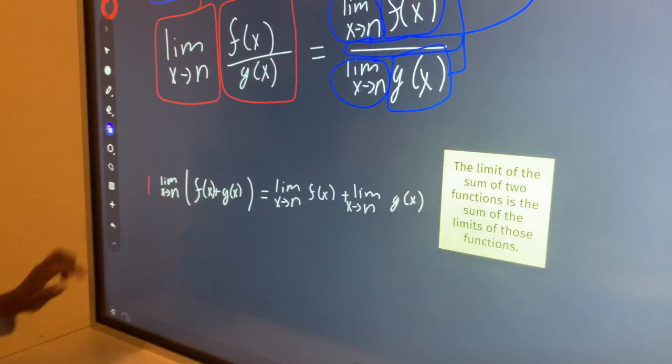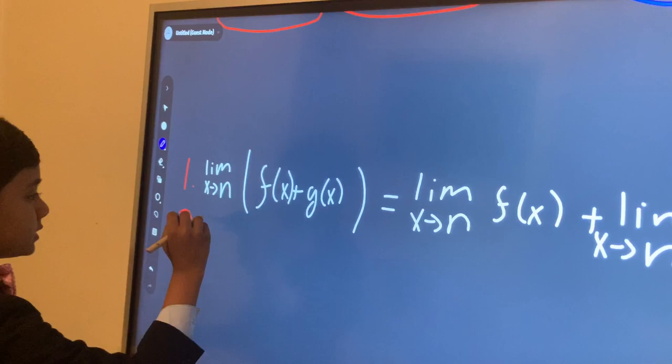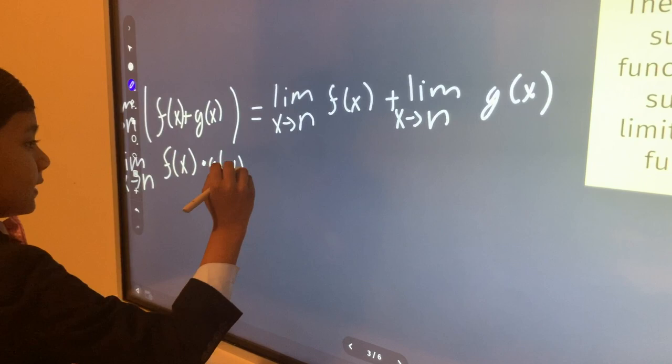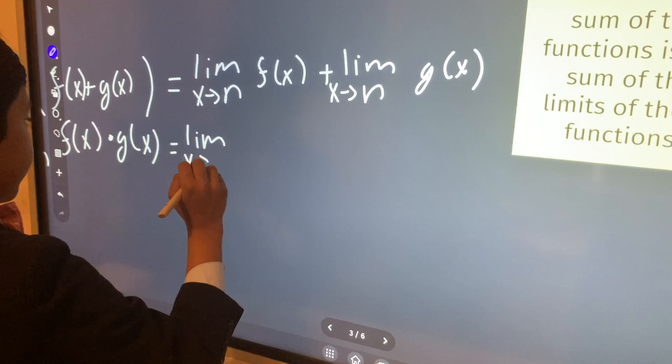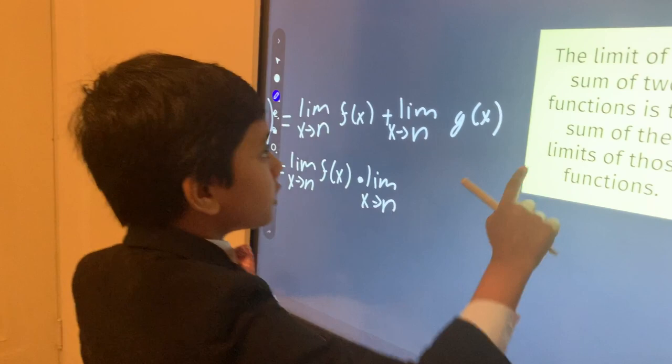So now I'll give you some time to look at that, and times up. So now let's look, it means that the limit as x approaches n of f(x) times g(x) is the product of those limits, is the product of the limits of those functions. This time you gotta write it down on your own, not making a sticky note for ya.